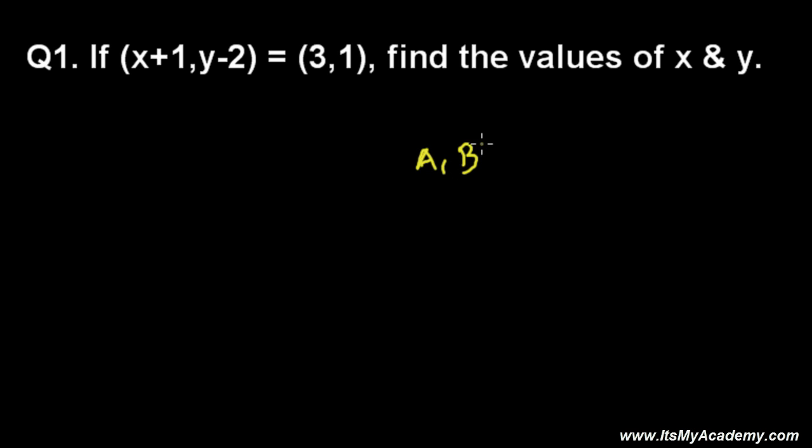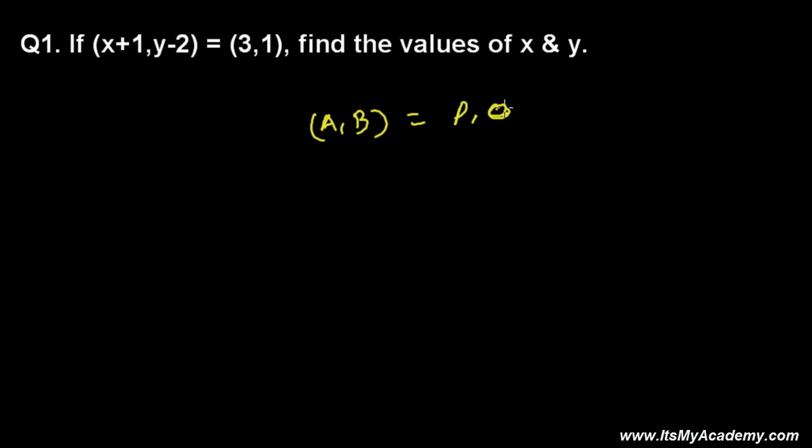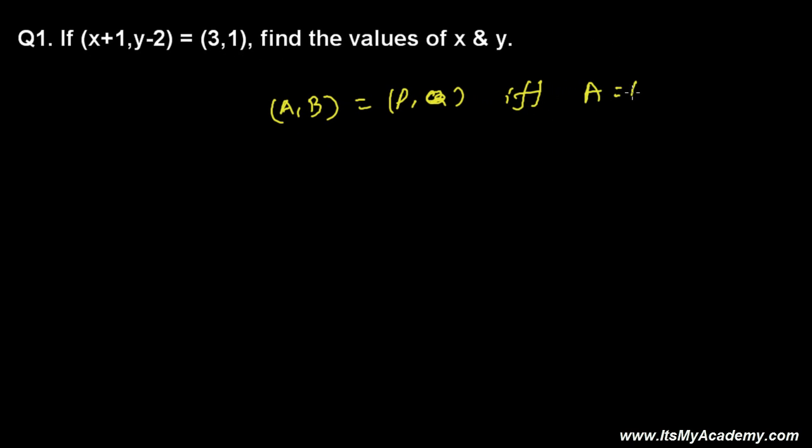Let's say ordered pair (A,B) is equal with ordered pair (P,Q) if and only if first term of both ordered pairs is equal and second term of both ordered pairs is equal. Alright.